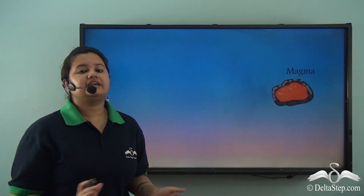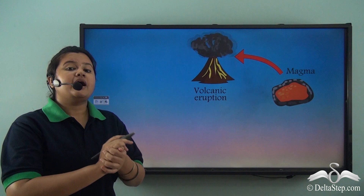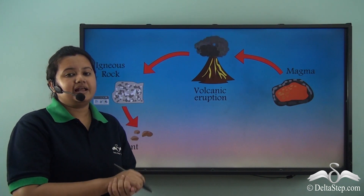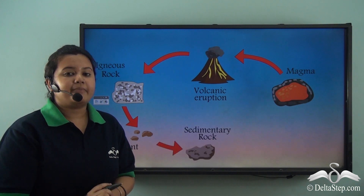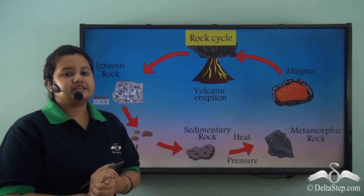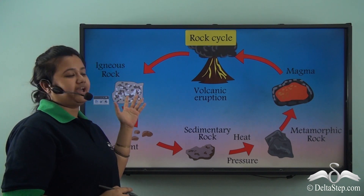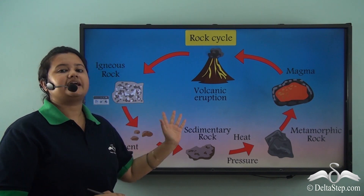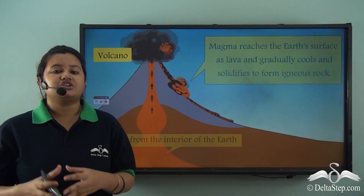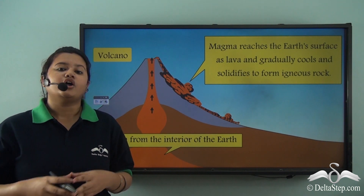All these rocks are buried deeper inside the earth over time and melt to form magma. The magma eventually, under the pressure of the earth's interior, erupts as a volcano. The volcano again forms igneous rock and the cycle continues. Each rock changes from one form to another — this is called the rock cycle.